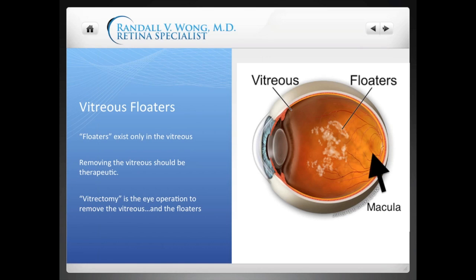Floaters exist only in the vitreous — that's where they live. Therefore, removing the vitreous as a whole should be therapeutic. If you can look at the illustration here on the right, where the artist has drawn in the floaters, a vitrectomy will basically be removing all of this stuff so that you would have a clear pathway through your cornea, through your lens, and so light hits your macula uninterrupted by all the floaters or debris. So vitrectomy is the eye operation to remove the vitreous, and thereby the floaters.